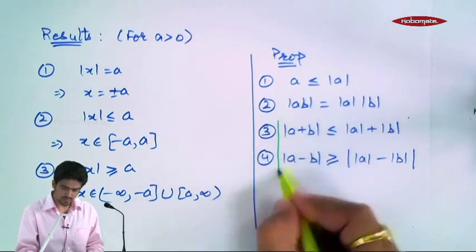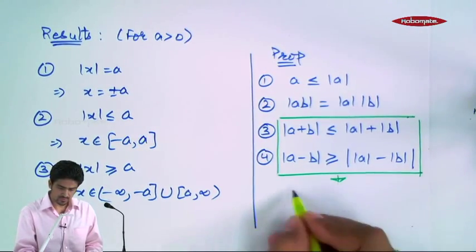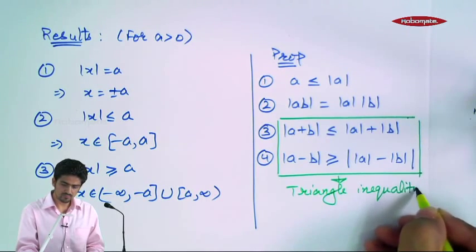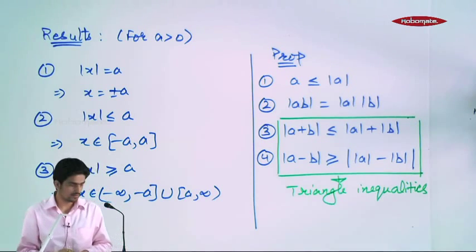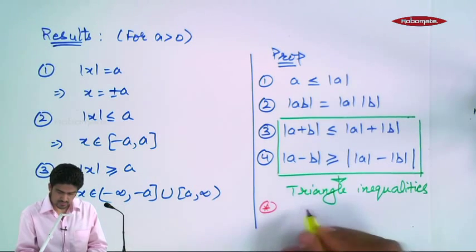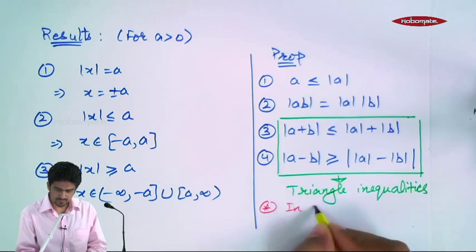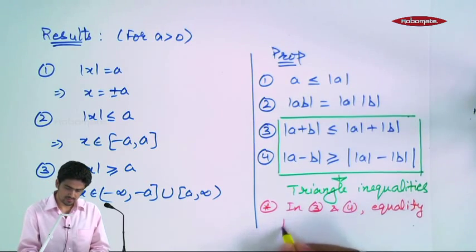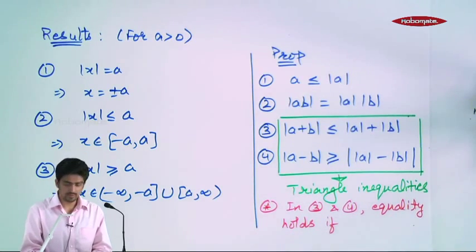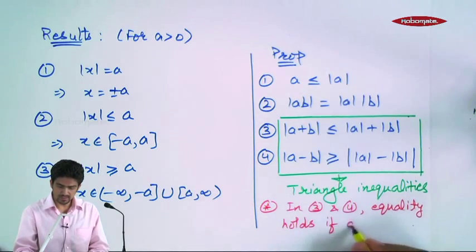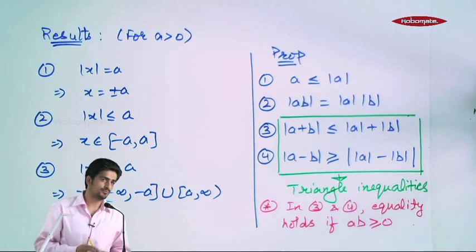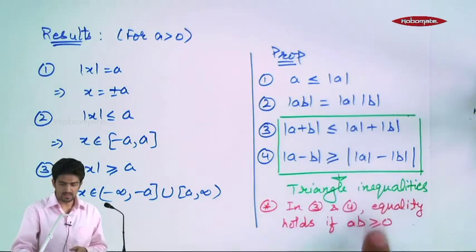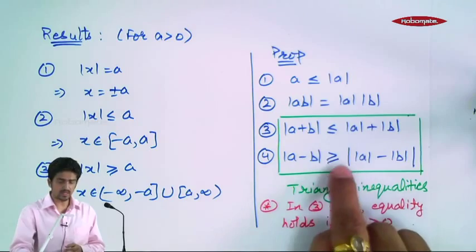Obviously, properties 3 and 4 are quite important, and inhe triangle inequality bhi bola jata hai. In 3 and 4, equality holds if a aur b ka sign same hoga, yaani ki a·b is greater than equal to zero. Agar a aur b ka sign same hain toh unka product positive hoga — that is the condition for equality. Agar yeh hold nahi, yaani a·b negative hai, toh yahan pe less than aur yahan pe greater than aa jayega.